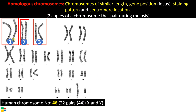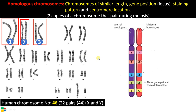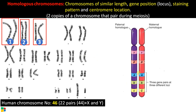Let us zoom in on this chromosome for better understanding. Suppose this is chromosome number one. As you can see, these chromosomes have the same length, the same centromeric region, the same staining pattern, and also the position of genes on the chromosome — which is called the locus or loci — is the same. You can see here there is a P gene, and in this chromosome also there is a P gene. Here also an A gene, and here also an A gene.